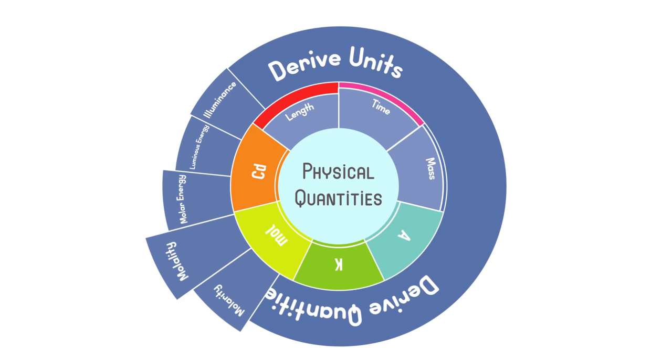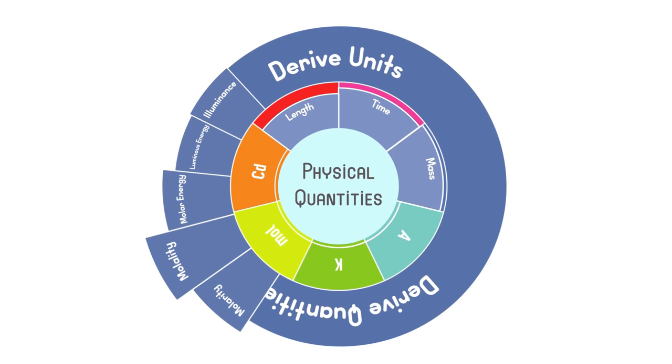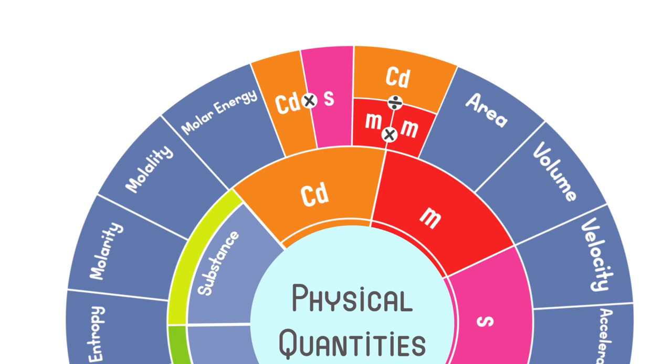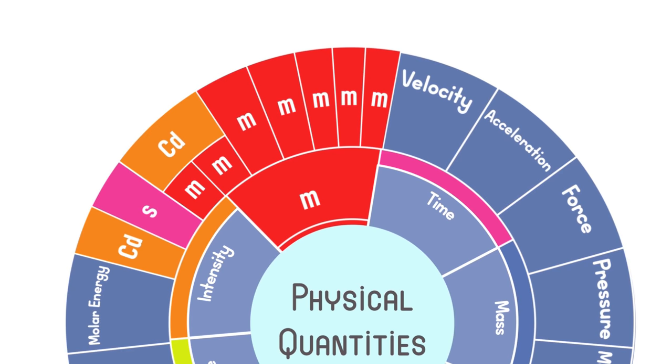Derived units: The units used to measure derived quantities are called derived units. They are defined in terms of base units. We get them by multiplying or dividing one or more base unit with each other. For example, the unit for area is square metre, and for volume is cubic metre, which are based on the unit of length.